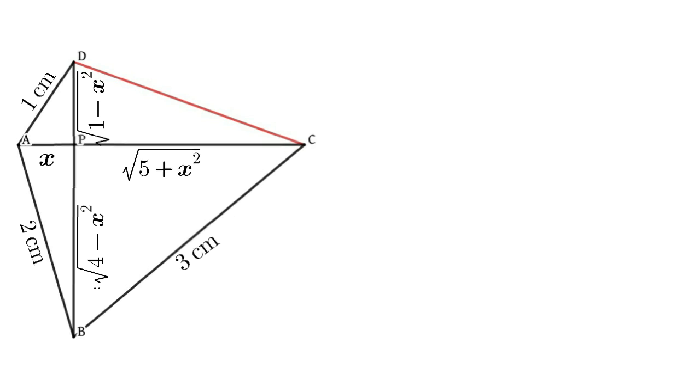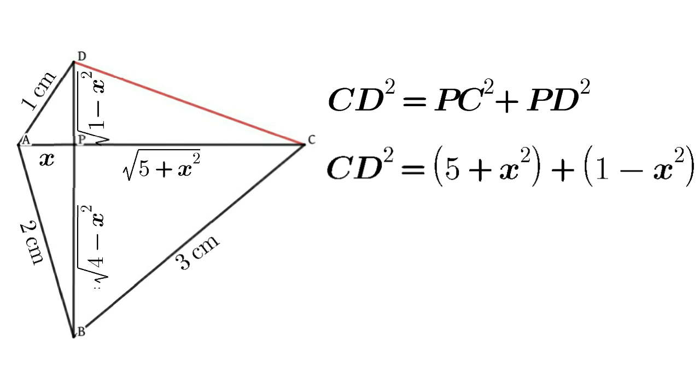Finally we apply Pythagorean theorem in triangle PCD. CD squared equals PC squared plus PD squared. That is, CD squared equals 5 plus x squared plus 1 minus x squared, which is equal to 6. That is, CD equals root 6 centimeters. Thank you.